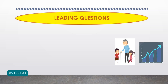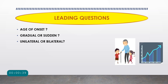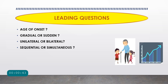Whenever a patient comes to you with the complaint of diminution of vision, there are certain leading questions you need to ask. Number one: what is the age of onset of loss of vision? Number two: whether the loss of vision was gradual or sudden, whether one eye or both eyes were involved, and if both eyes were involved, whether simultaneously or sequentially.